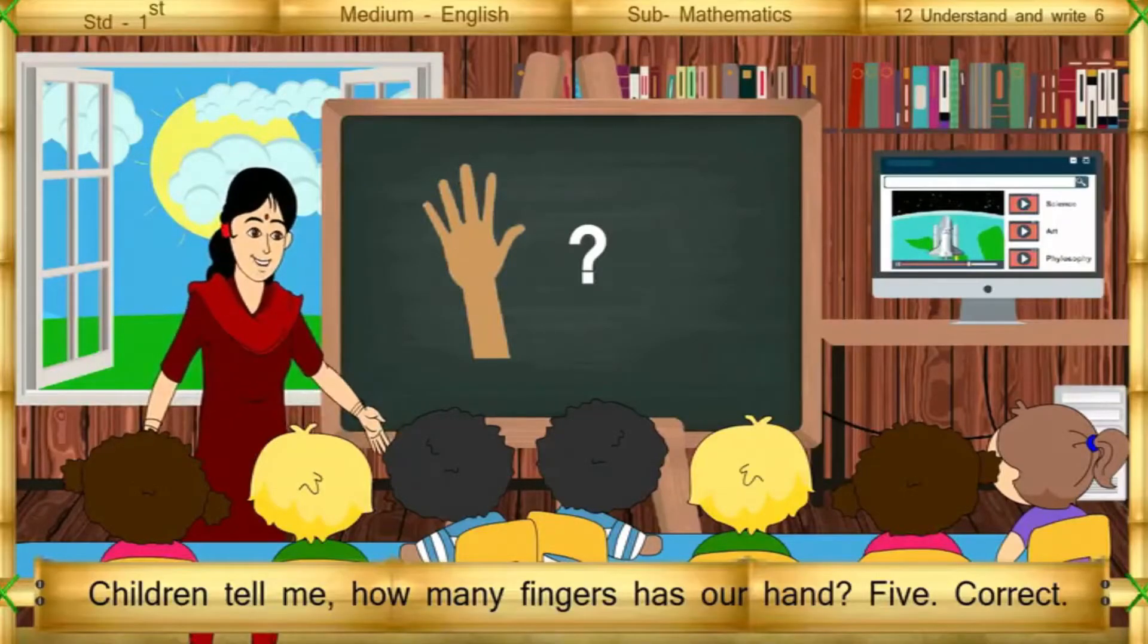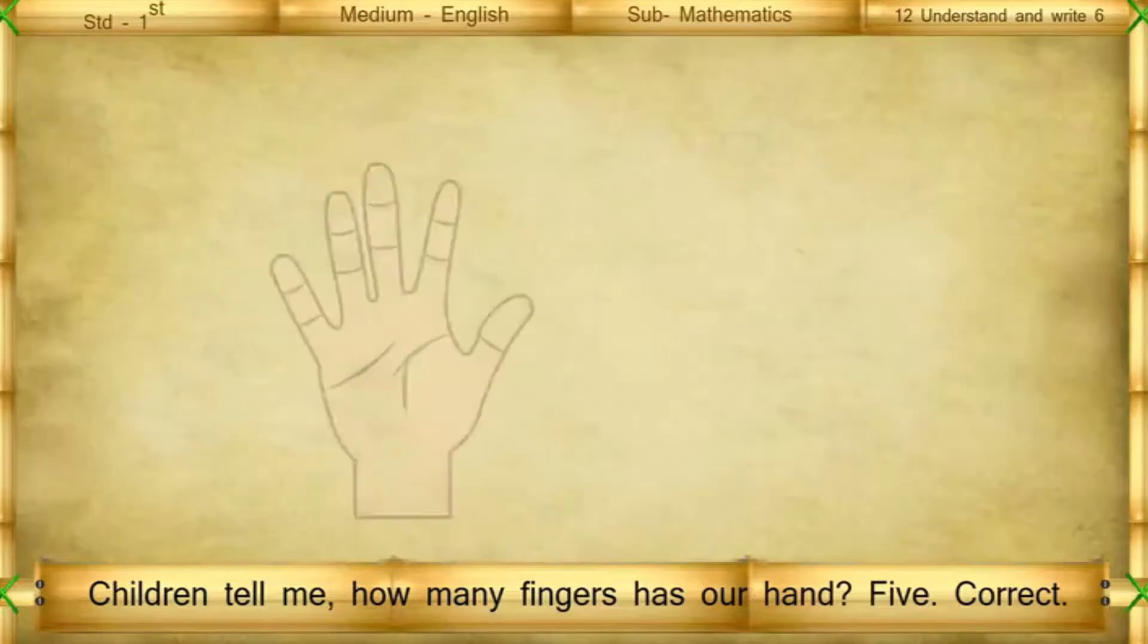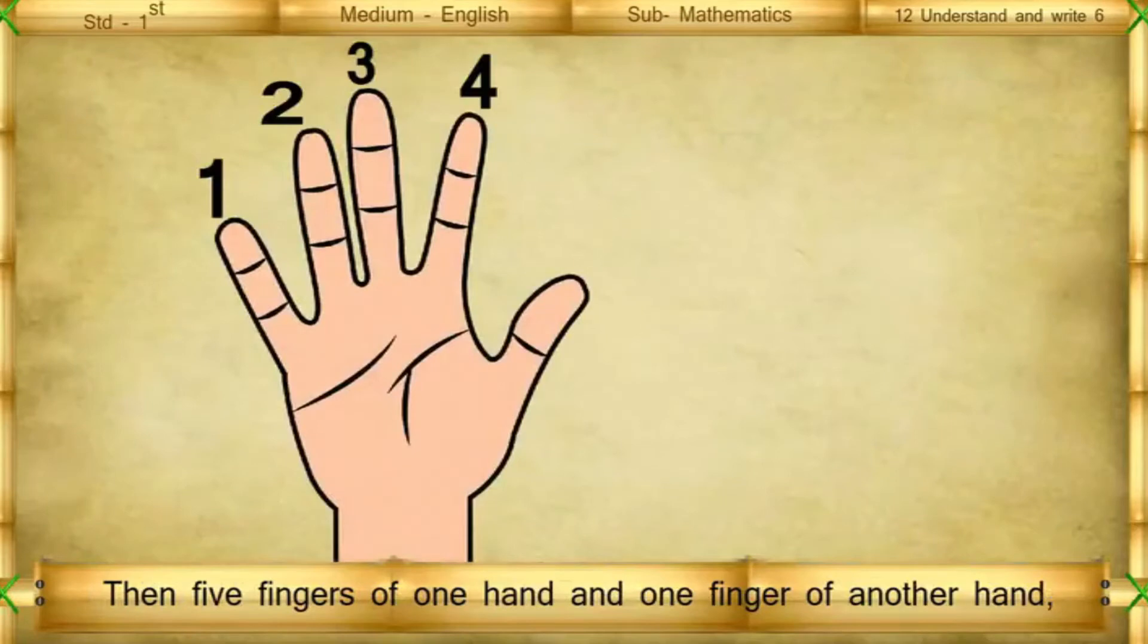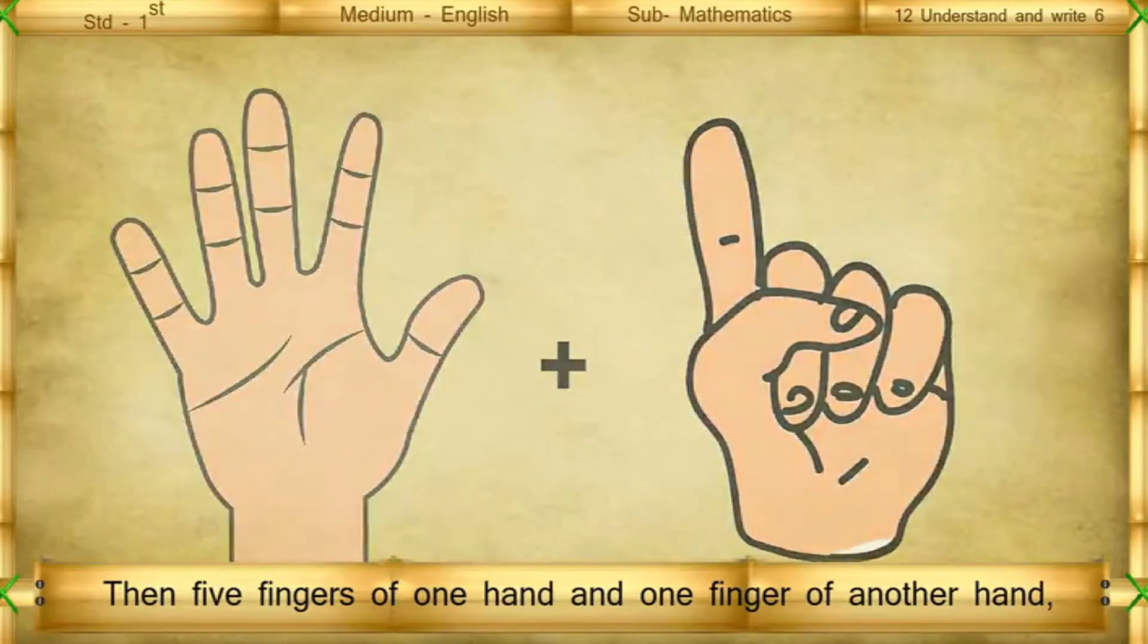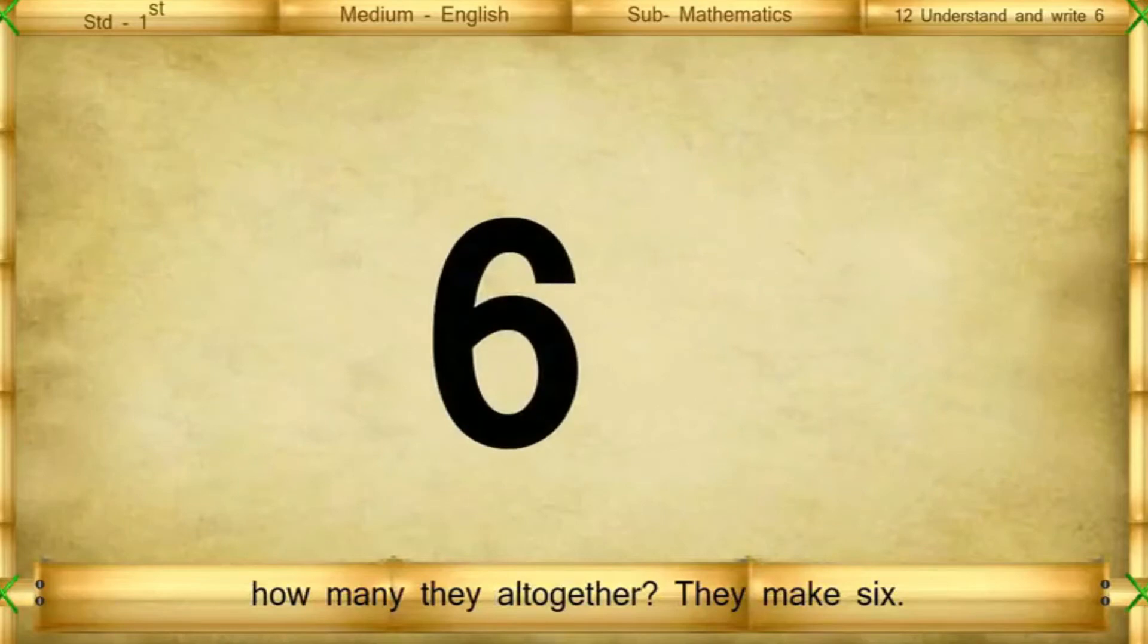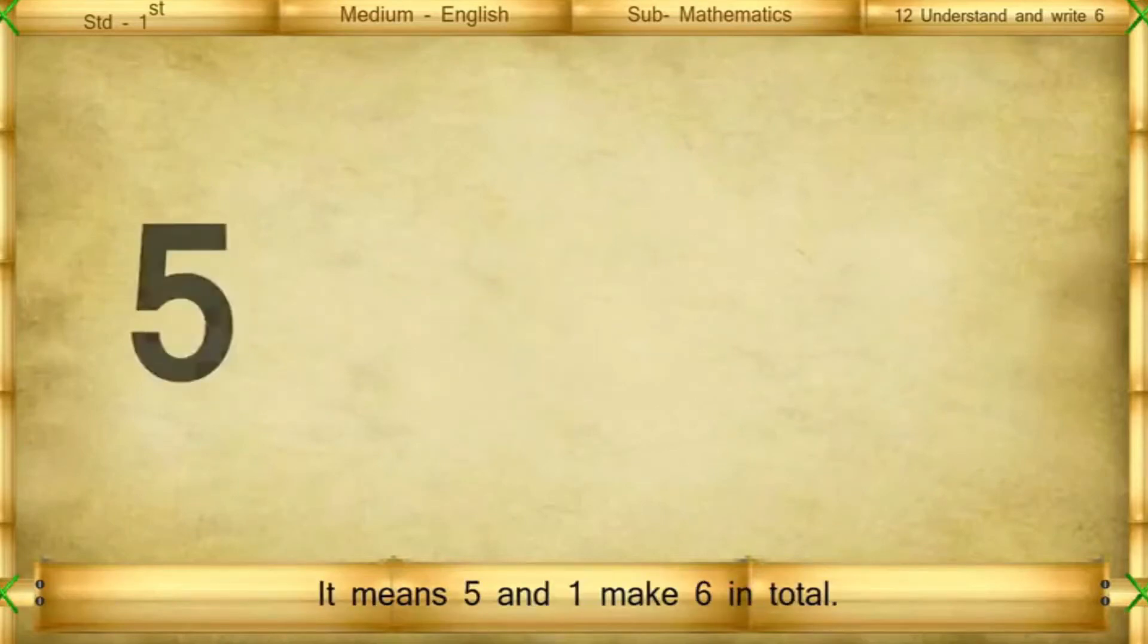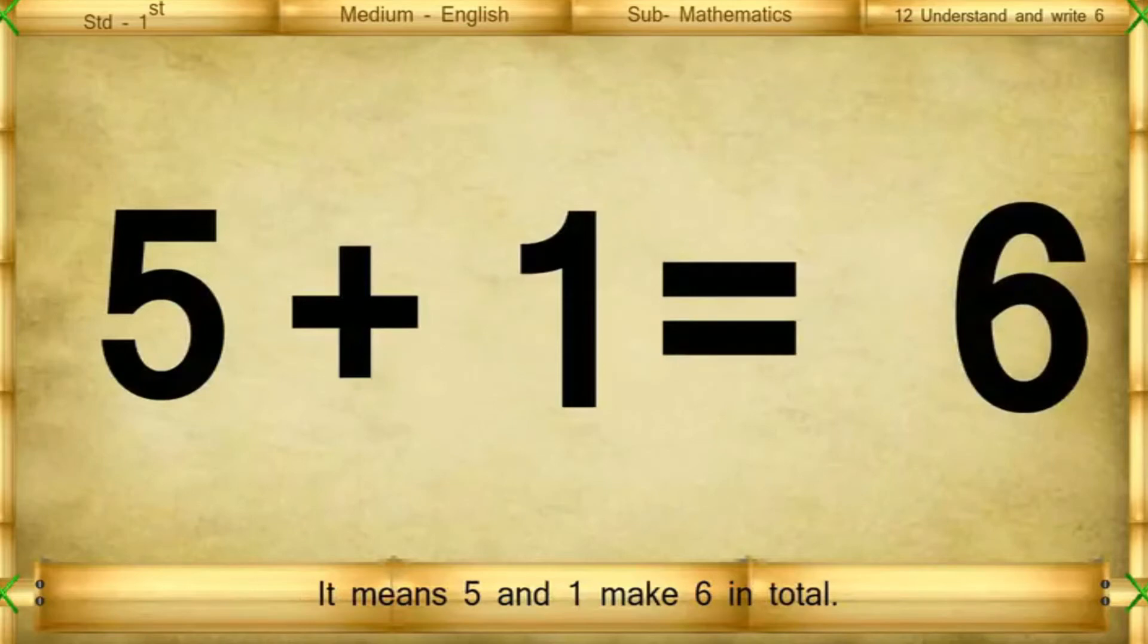tell me how many fingers has our hand? Five. Correct. Then 5 fingers of one hand and 1 finger of another hand. How many are they all together? They make 6. It means 5 and 1 make 6 in total.